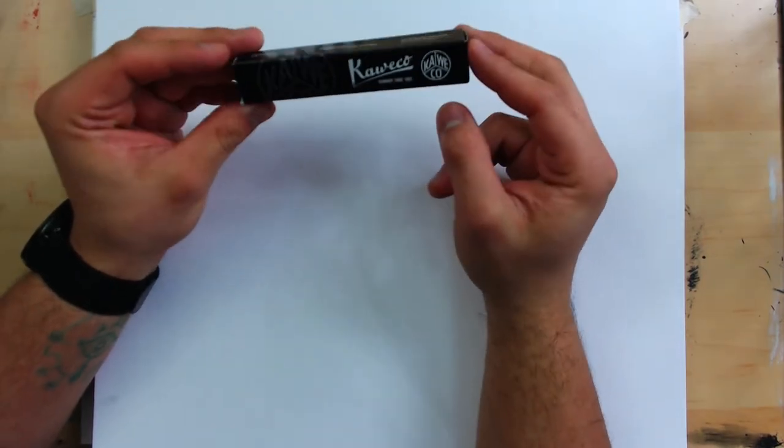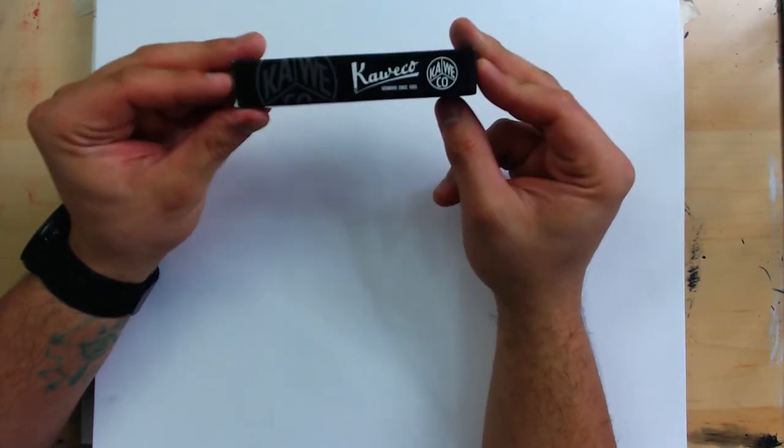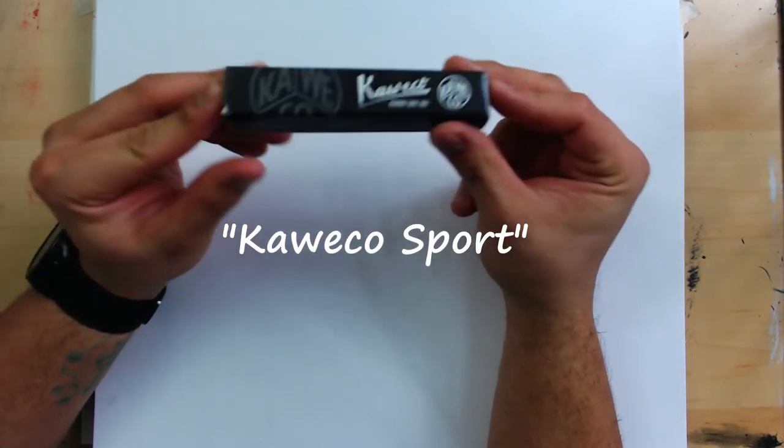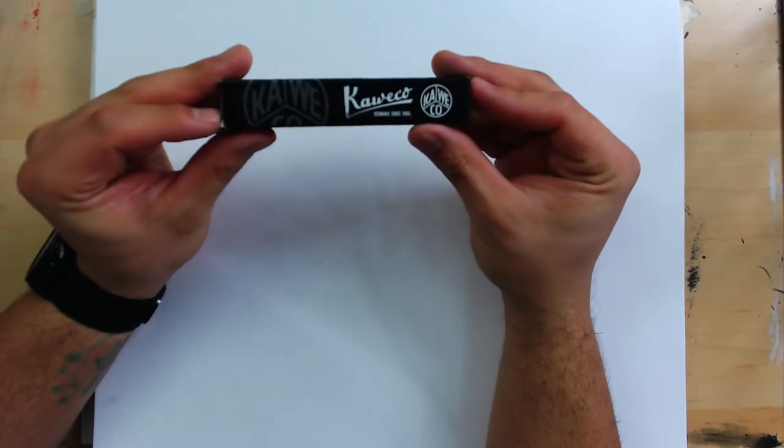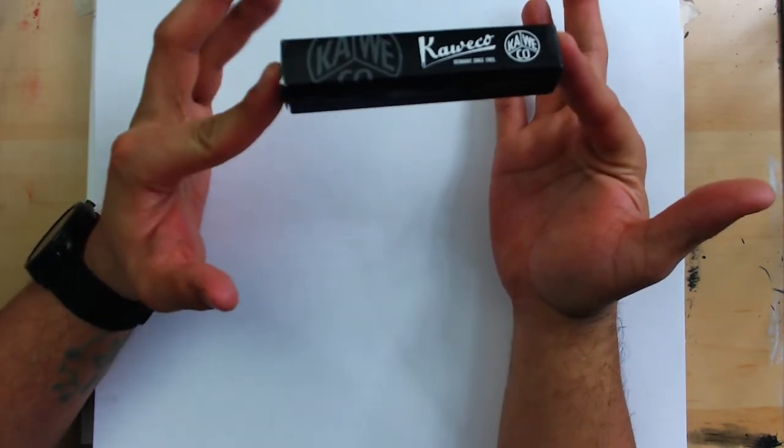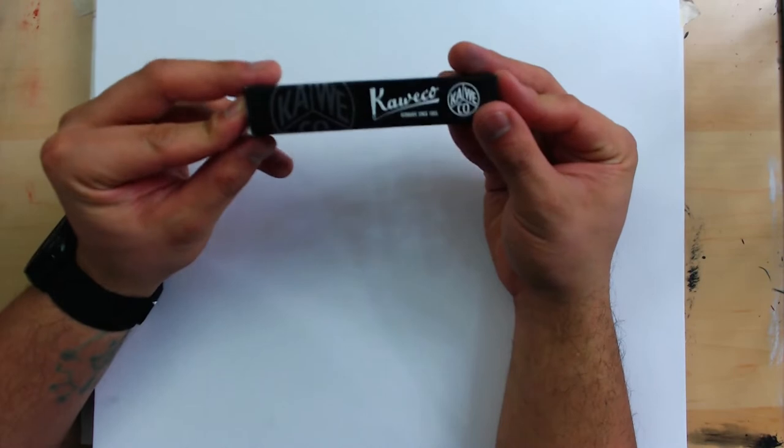Welcome back everybody to VVR. Today we're going to be reviewing the KaEco. KaEco makes a number of different items like fountain pens and lead holders.